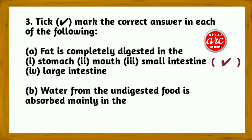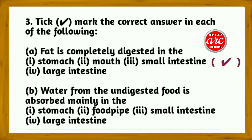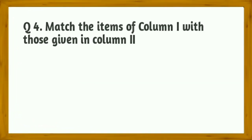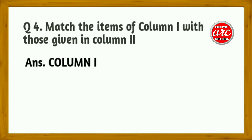(b) Water from the undigested food is absorbed mainly in the — stomach, food pipe, small intestine, or large intestine? The correct answer is large intestine.